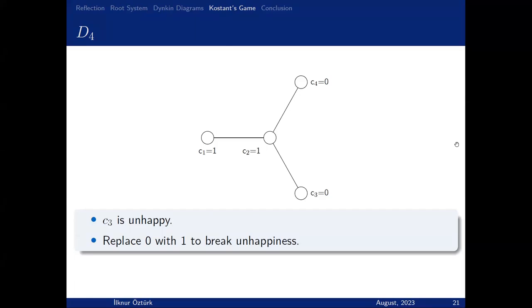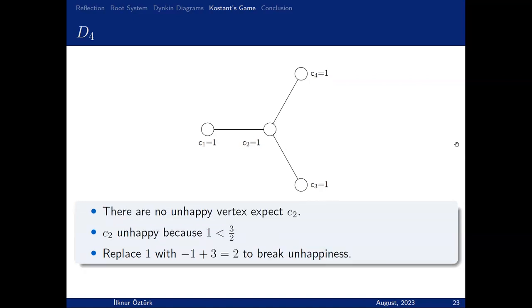Now C3 is unhappy—C2 and C1 are okay, but C3 is unhappy. There is just one neighbor, C2. And 1 divided by 2 is greater than 0, so I will do the same thing again, and for C4 again. Now the corner ones are not unhappy, they're okay. But the middle one—we can check the middle one. 1 plus 1 plus 1 divided by 3 is greater than 1, so C2 is unhappy. I have to fix it. To fix it, I will sum all neighbors: 1 plus 1 plus 1 minus 1 equals 2. I replace 1 with 2 to break the unhappiness.